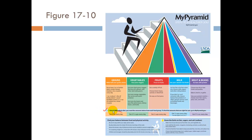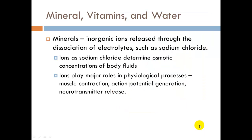As far as grains, 6 ounces every day. Vegetables, 2 and a half cups. Fruits, 2 cups. Milk, 3 cups every day to get the adequate amount of calcium. Meats and beans, 5 and a half ounces every day. Please look over the food pyramid — there should be some questions about that.